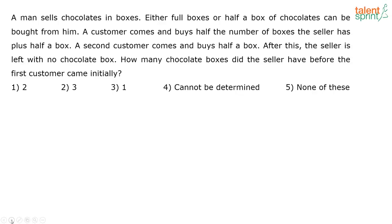When you look at the options, I am taking option two. Assume that the man has two chocolate boxes with him. So you can either buy a full box from him or half a chocolate box.